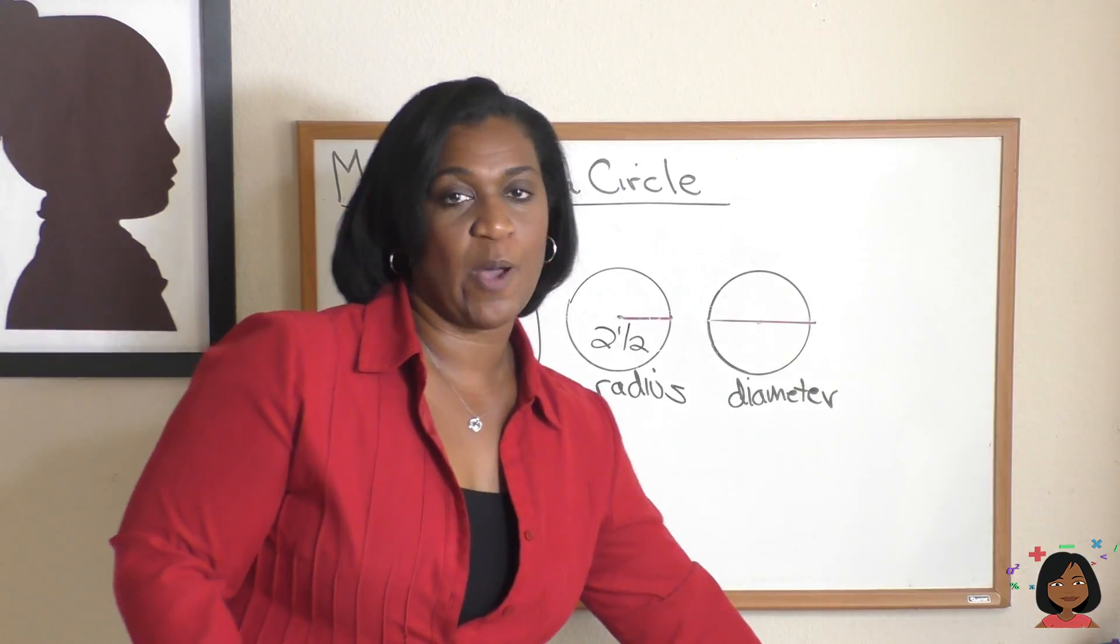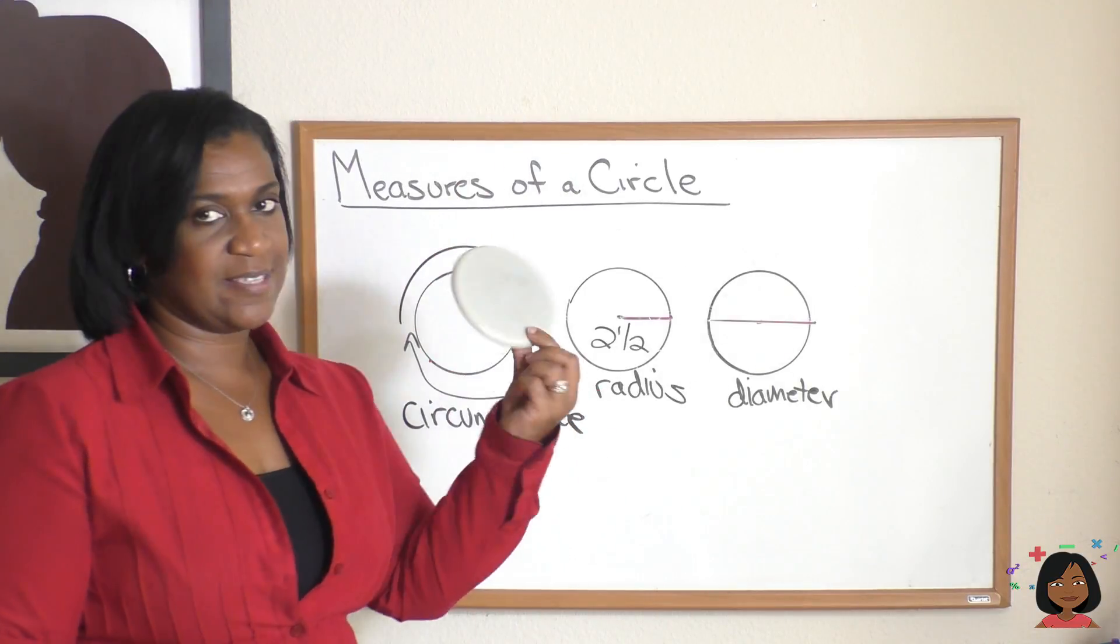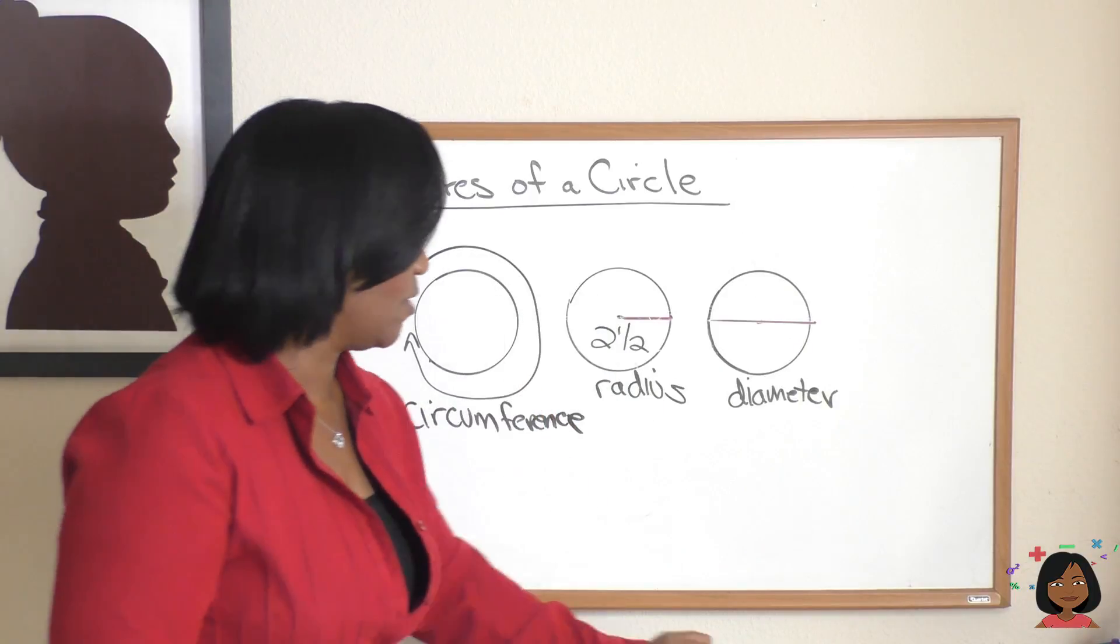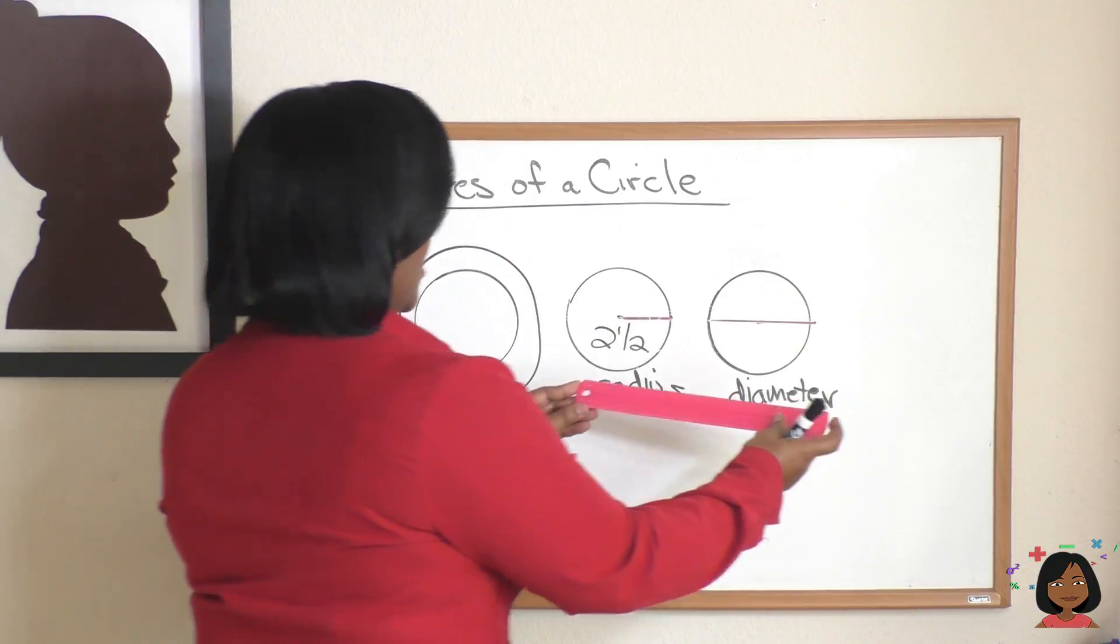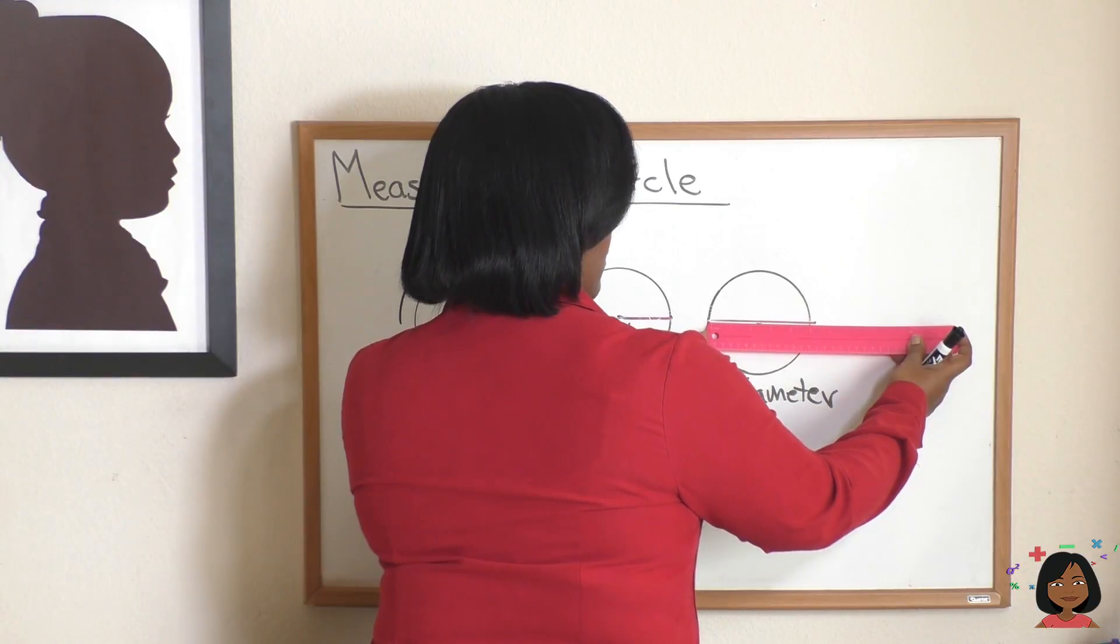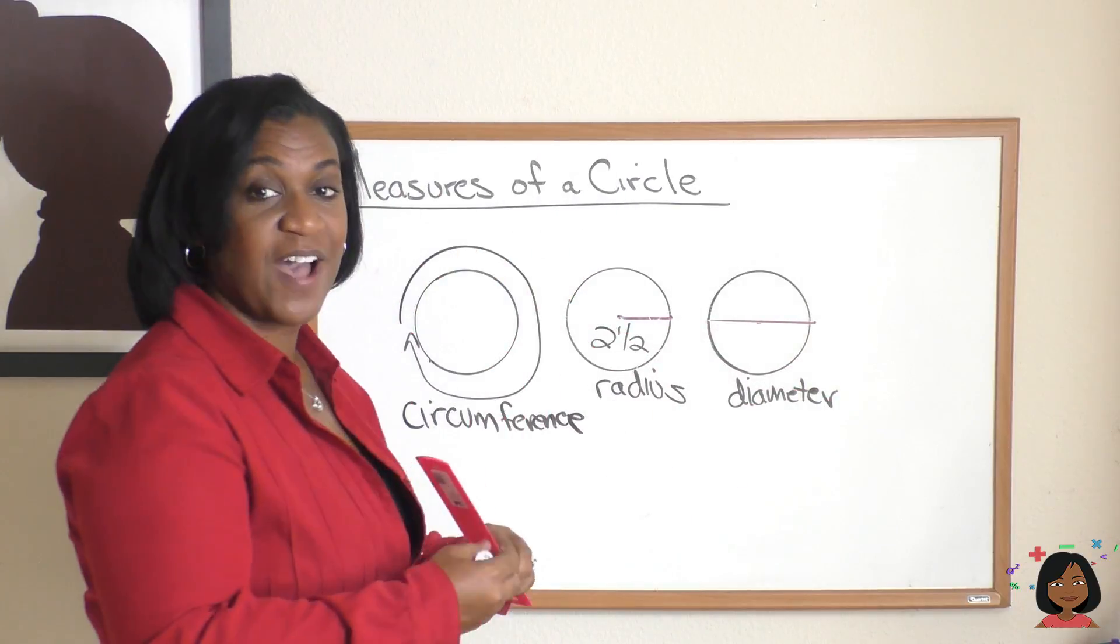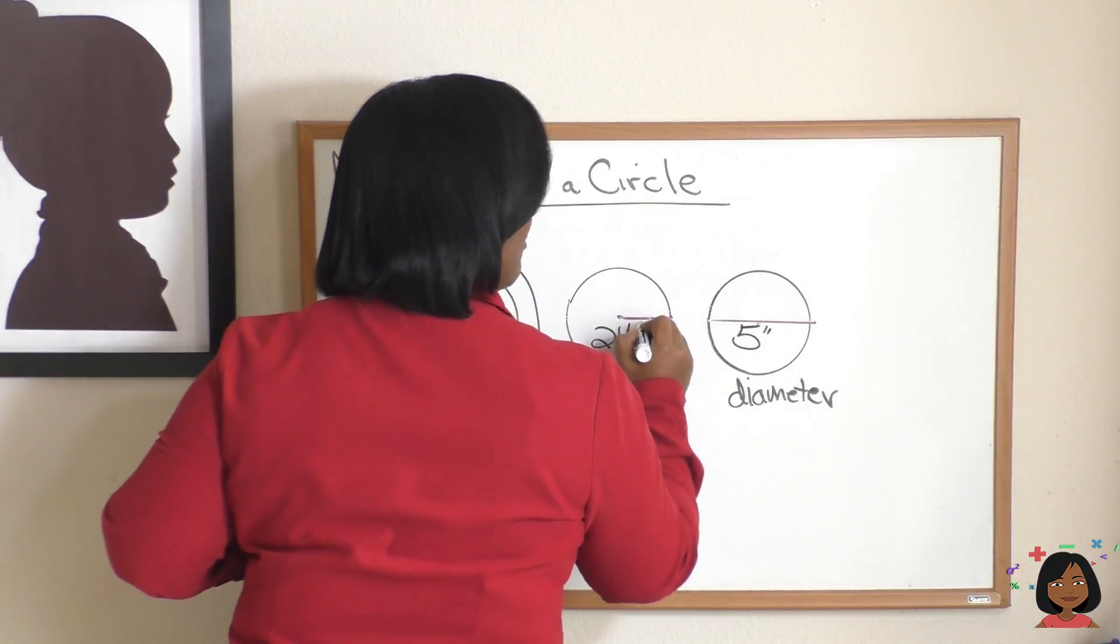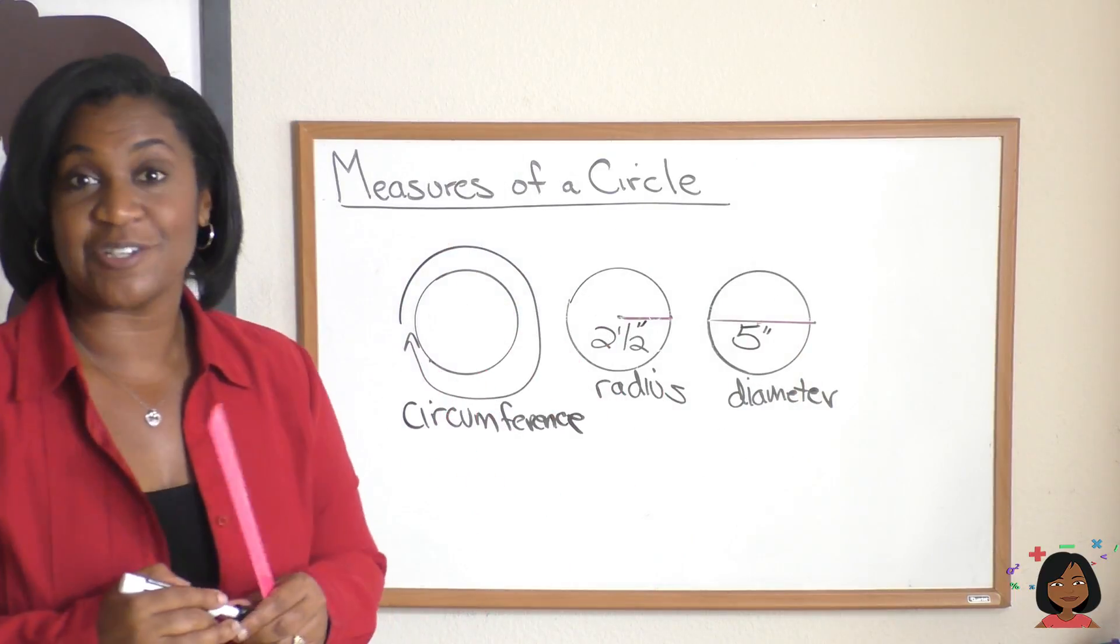Now let me go measure the diameter. By the way, in case you're wondering how I drew these circles, I had this handy circle here, so they are equal, because you all know I can't draw circles very well. So let's measure the diameter. And it is five inches. I didn't put my inches in. There we go.